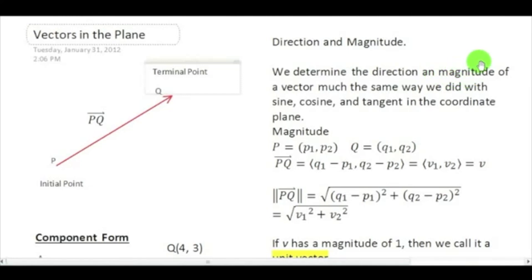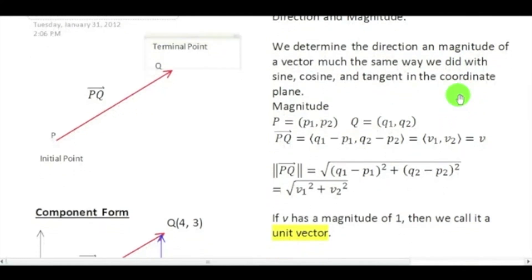So direction and magnitude. We determine the direction and magnitude of a vector much the same way we did last time when we did sine, cosine, and tangent. We're going to take two points. You have P1 and P2. That's my first point. Q1 and Q2, my second point.